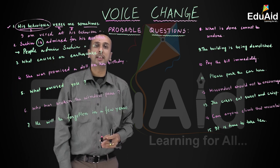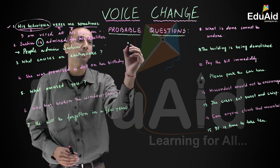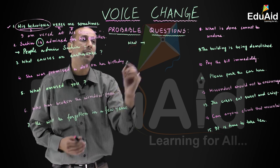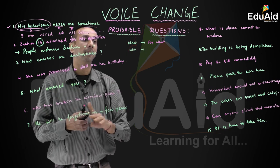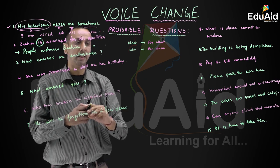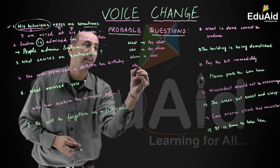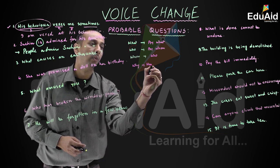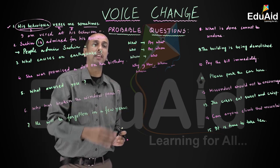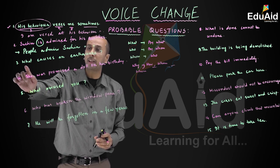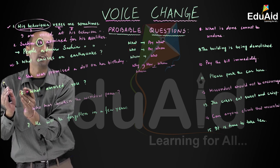Question number three: 'What causes an earthquake?' This is an interrogative sentence. An important rule: if the question word is 'what,' the passive uses 'by what'; if it is 'who,' use 'by whom.' For other interrogative pronouns like why, how, when, where — active or passive will remain the same. An interrogative sentence remains interrogative in both active and passive.